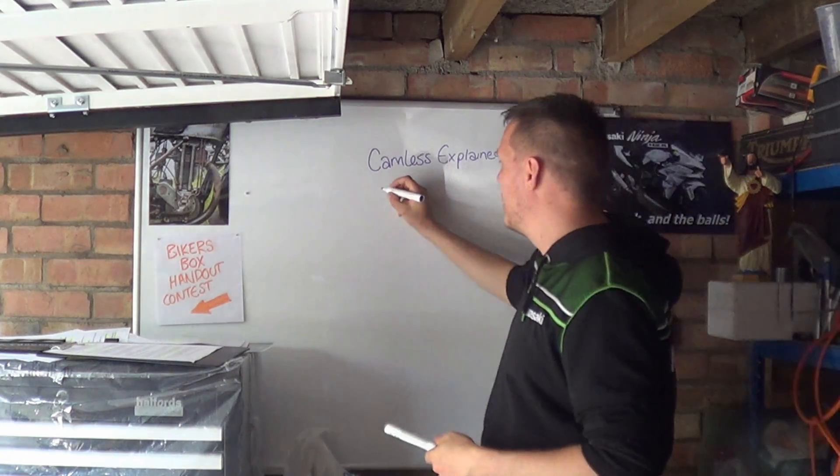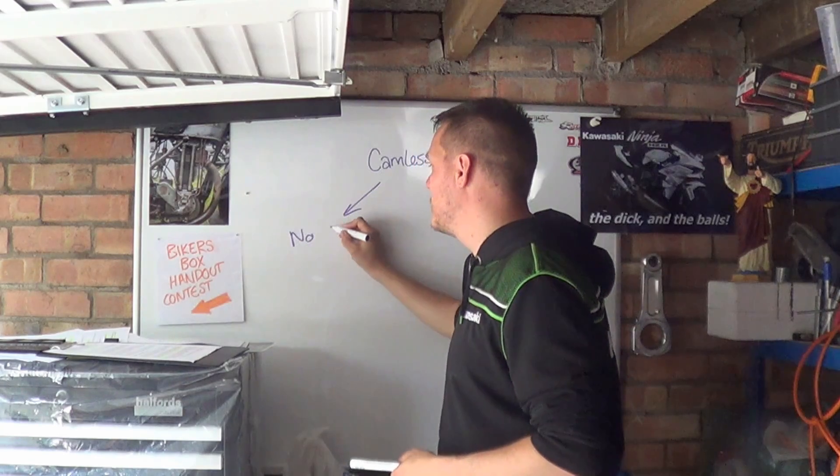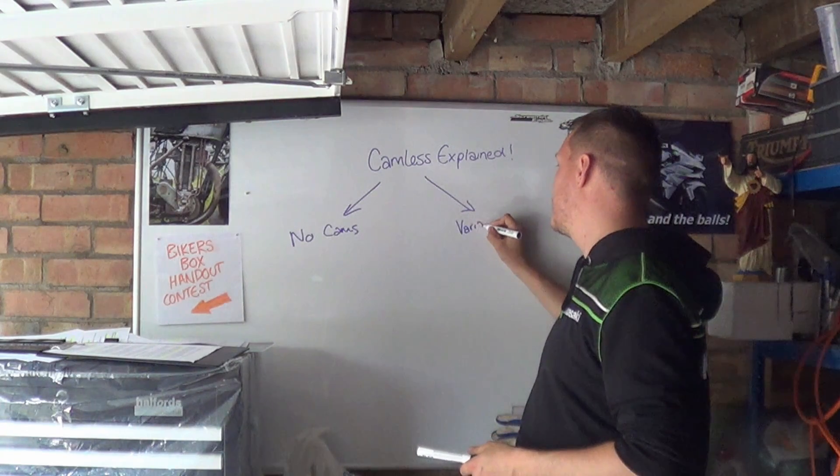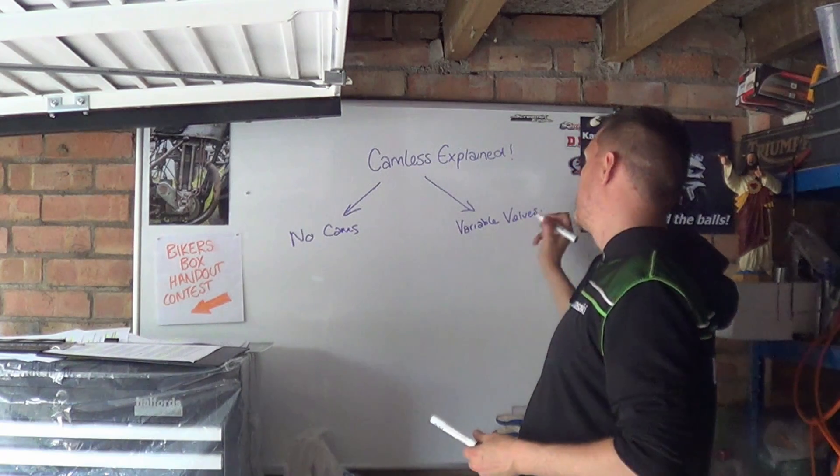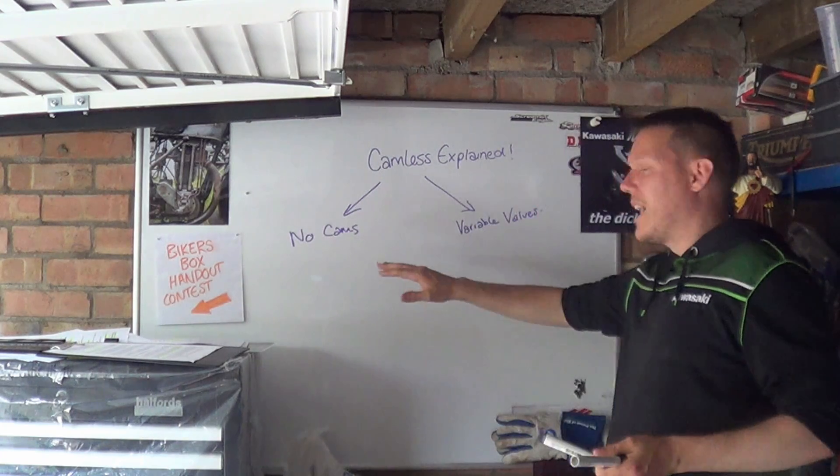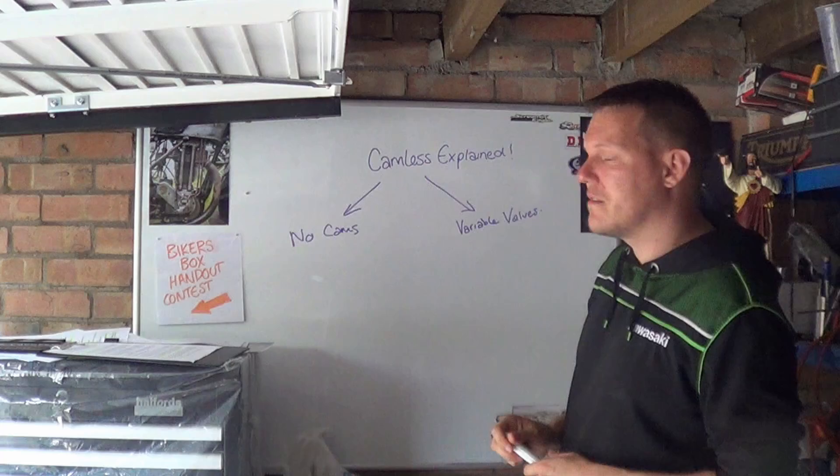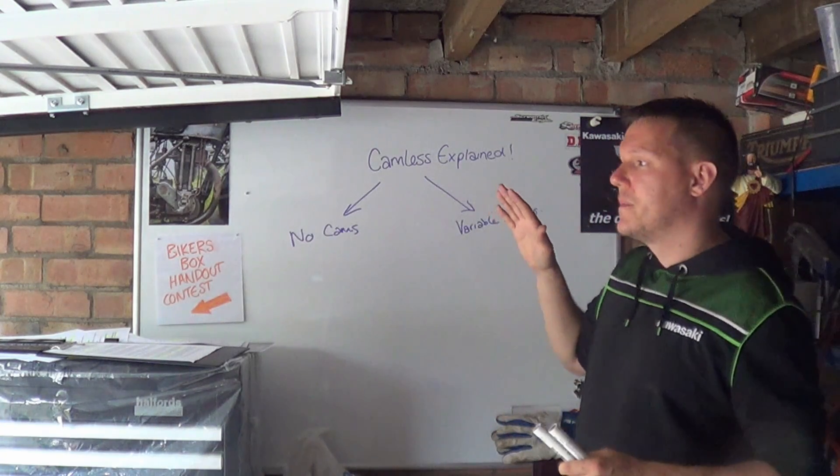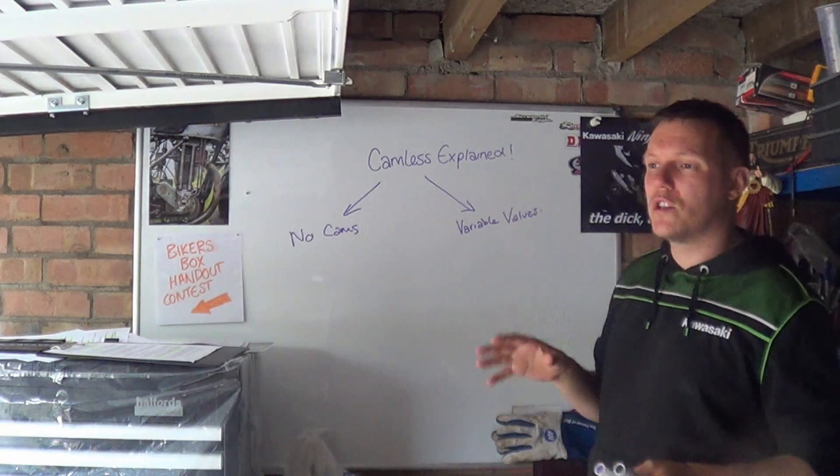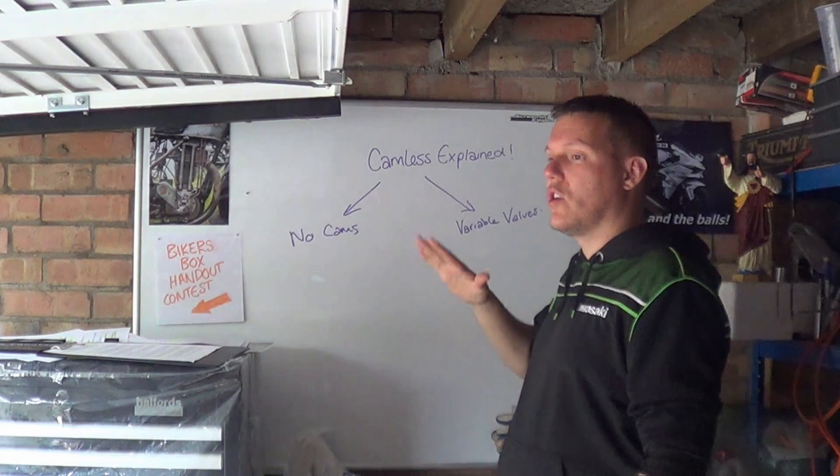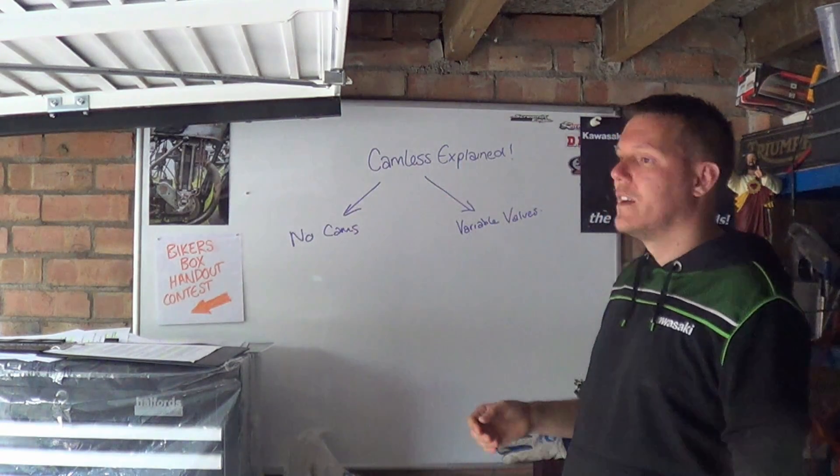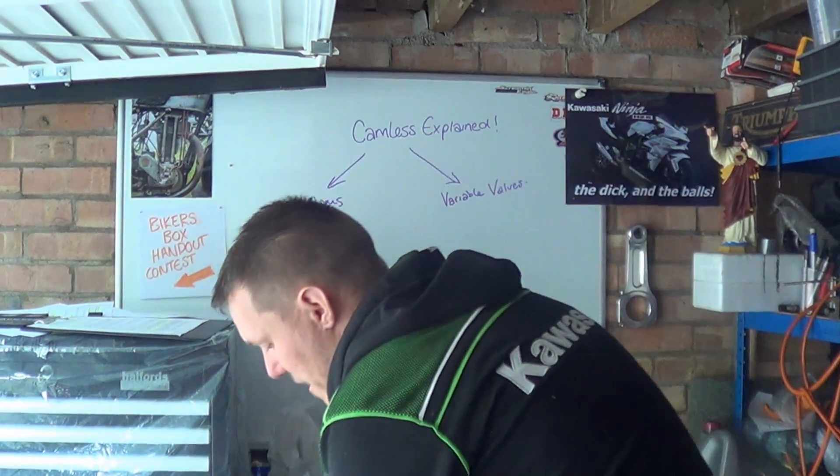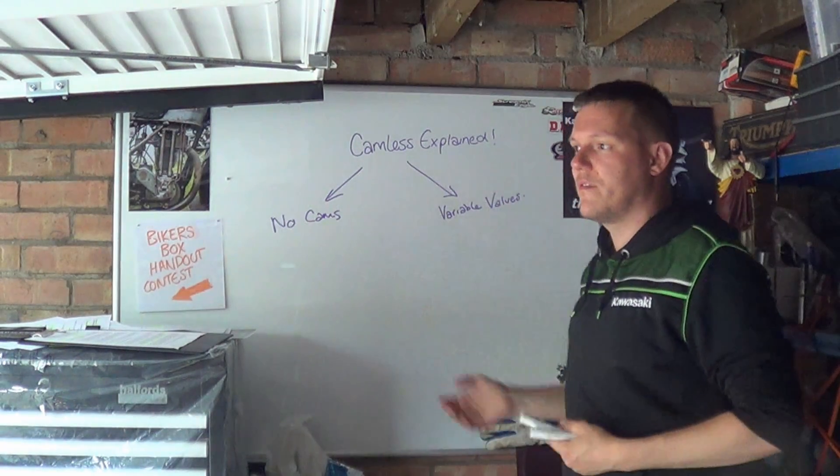There's two parts to this. There's camless, as in getting rid of cams, no cams. But there's also another version, which is variable valves. Generally we think they are the same thing, but there are ways you can get around it, where you could use a cam to drive a pressure system, and then control when you close, which would change your duration.